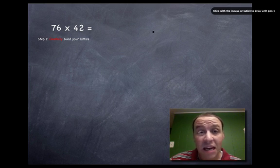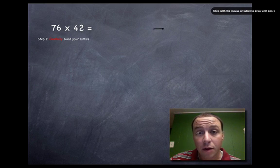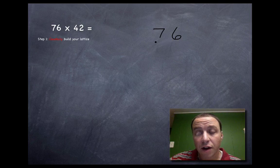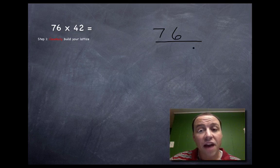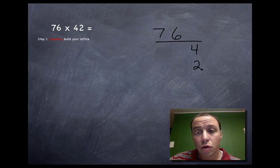Let me show you what that's going to look like. So what I do first is take the big number and put it on top: 76, and I underline it. See how I had that little tail that extended at the end there? You'll see why in a second, because I'm going to take the second number and I'm going to write it straight up and down underneath that tail.